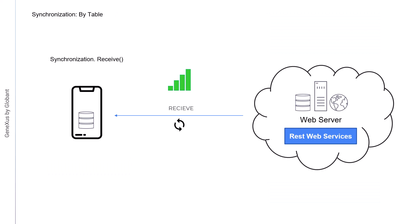Synchronization by table is useful in scenarios with a small number of records, or when changes are made very frequently, because in this case almost all the data has to be sent in each synchronization. Its advantage, compared to synchronization by row, is that it requires significantly less processing on the server side. To determine which tables were changed and therefore have to be sent to the device, a hash is used. It's the result of calculating a code that identifies the data set of each table. When a client requests a synchronization, the hashes of each table are sent to the server — they were sent by the server in the previous synchronization.